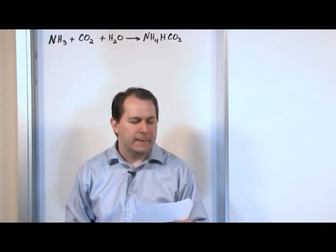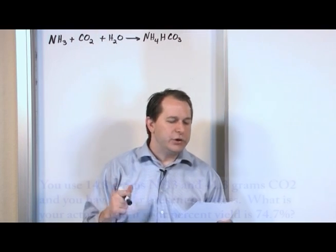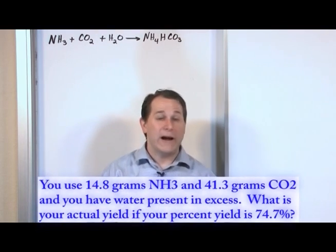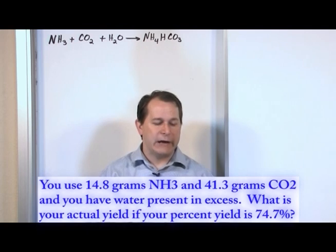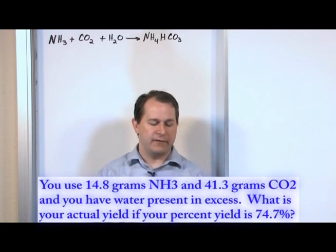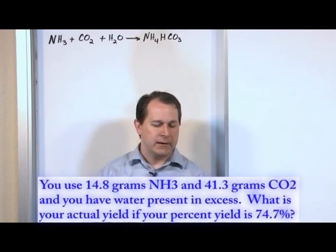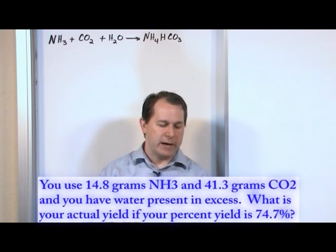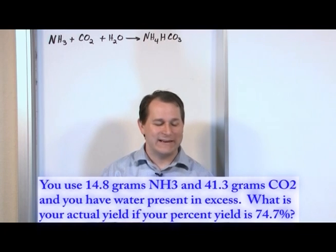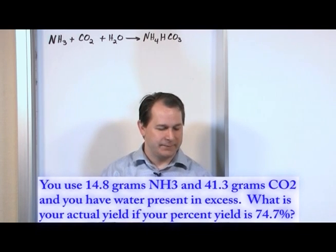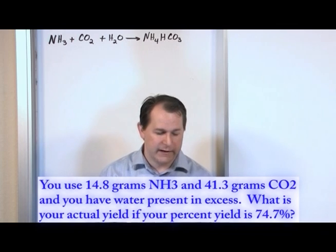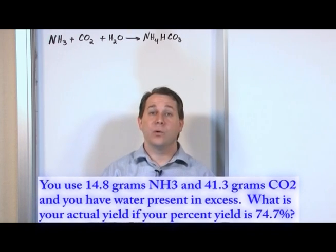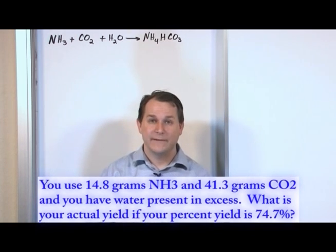The question says you use 14.8 grams of NH3 and 41.3 grams of CO2 in your reaction, and you have water present in excess. What is your actual yield if your percent yield is 74.7%?